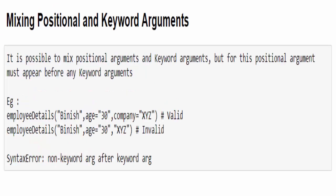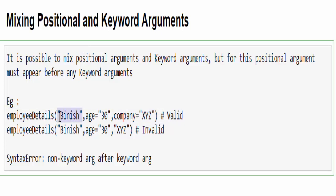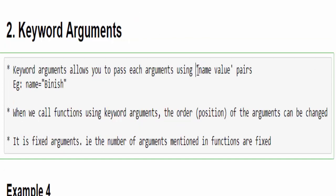An additional note for interview purposes: we can mix both positional arguments (the default ones we saw first) and keyword arguments in the same program. The only thing to remember is keyword arguments should always follow positional arguments. For example, in the input parameter: positional, keyword, keyword — this is a valid syntax. But positional, keyword, positional is invalid. If you execute that code you will get a SyntaxError: 'non-keyword argument after keyword argument.' A short recap: we use name-value pair mechanism, we can change the position or order of arguments, and these are fixed arguments.